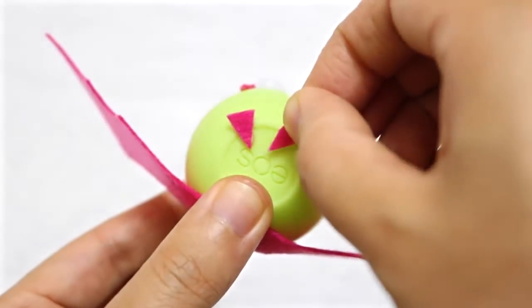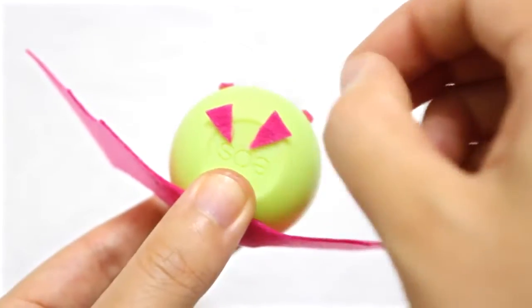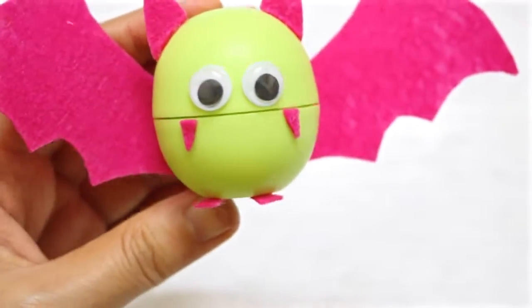The last step is to use two small triangles to make the feet. And that's all there is to it.